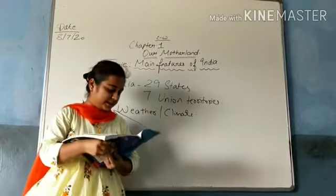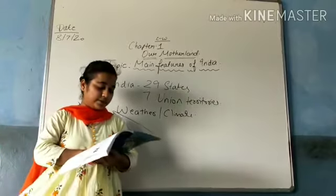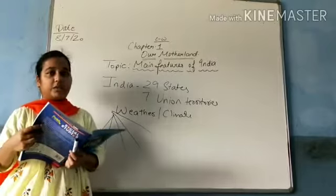The first is the northern mountains, second, the northern plains, third, the western desert, fourth, the southern plateau, fifth, the coastal plains and islands. This is the division in which you can divide.